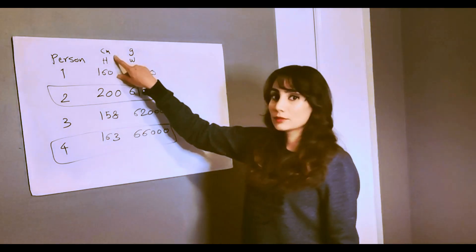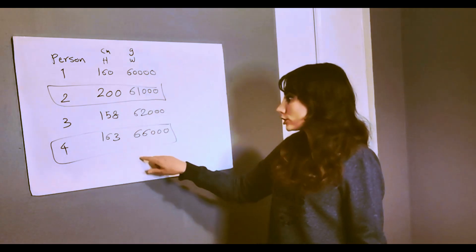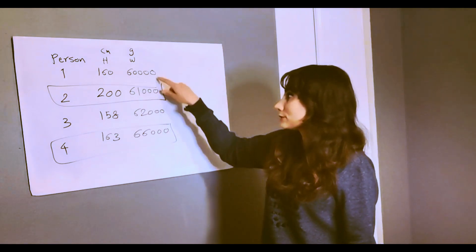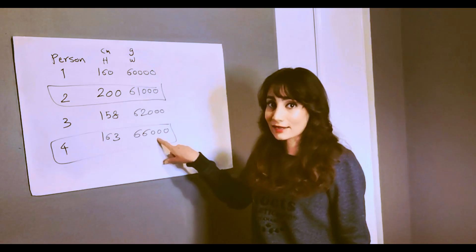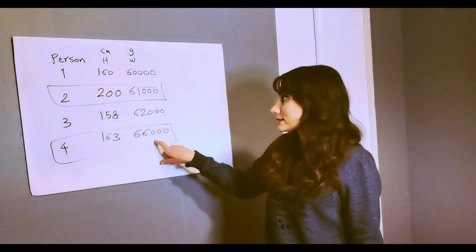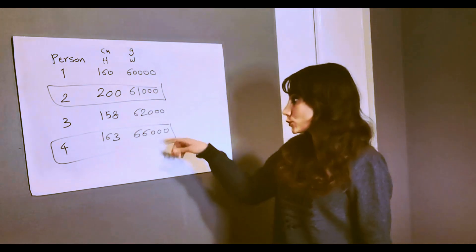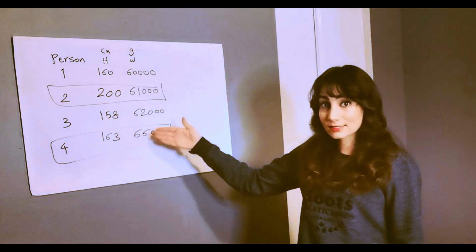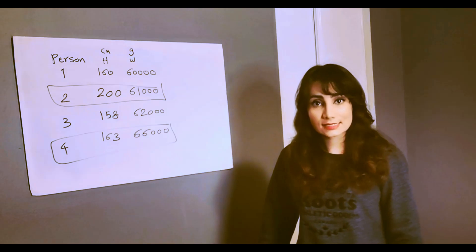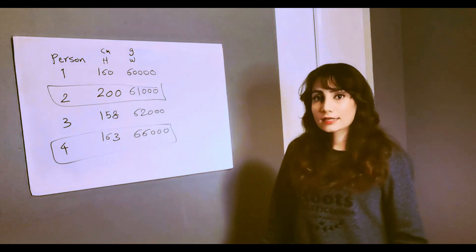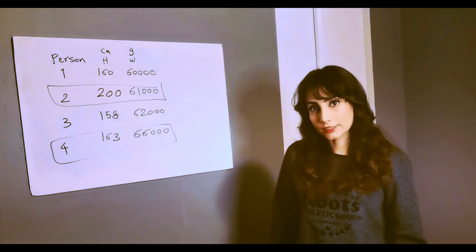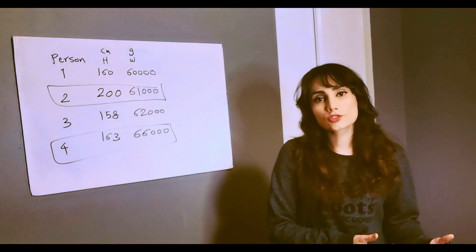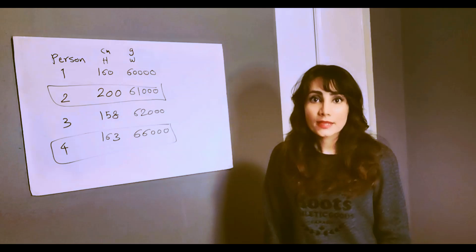The machine doesn't understand units. It doesn't understand what you mean by centimeters or grams. Just look at these numbers: 66,000, 62,000, 61,000, 60,000. The difference between the weights is much larger in magnitude, whereas 200 versus 160 is nothing compared to that 60,000 scale. The machine doesn't care about height anymore because those numbers are very, very small relative to the weight values.